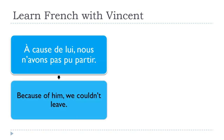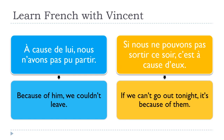« À cause de lui, nous n'avons pas pu partir. » — Because of him, we couldn't leave. « Si nous ne pouvons pas sortir ce soir, c'est à cause de eux. » — If we can't go out tonight, it's because of them.